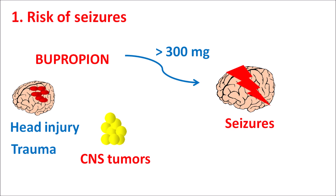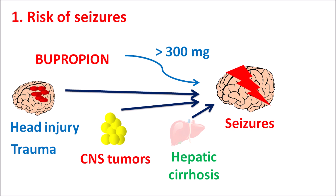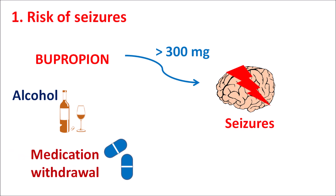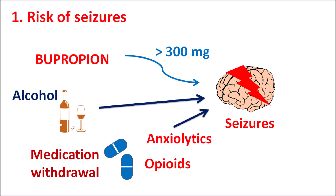Similarly, in patients with any head injury or trauma, patients with central tumors, or patients with hepatic cirrhosis, the risk of seizures is more pronounced with bupropion. In patients with excessive alcoholism or those experiencing sudden medication withdrawal — such as from anxiolytics or opioids — the risk of seizures is also increased, so bupropion is contraindicated in those situations. CNS stimulants such as cocaine can also increase the risk of seizures, so bupropion is contraindicated with cocaine as well.